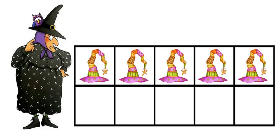How many hats are there now? You're so clever — you looked and you said five. You know that there are five hats in one row. And look, there are five empty squares.